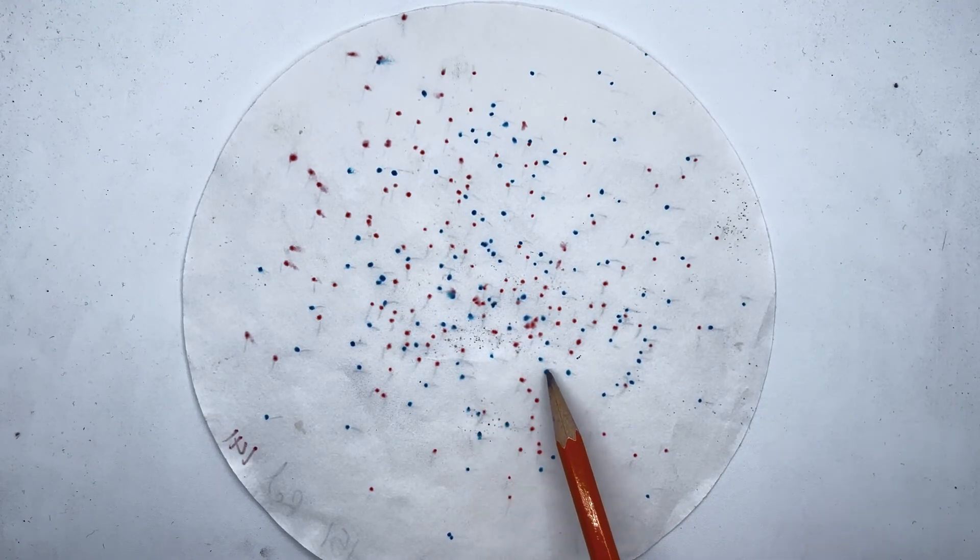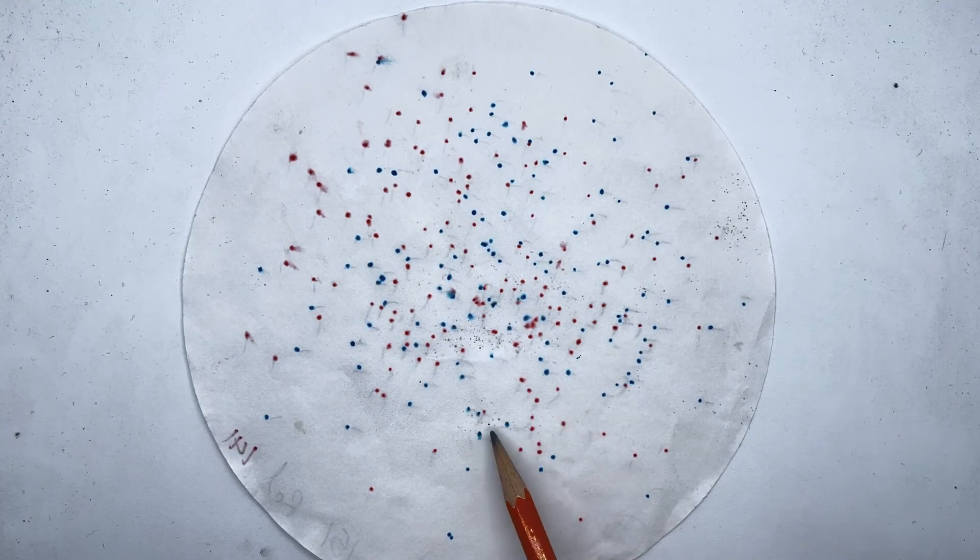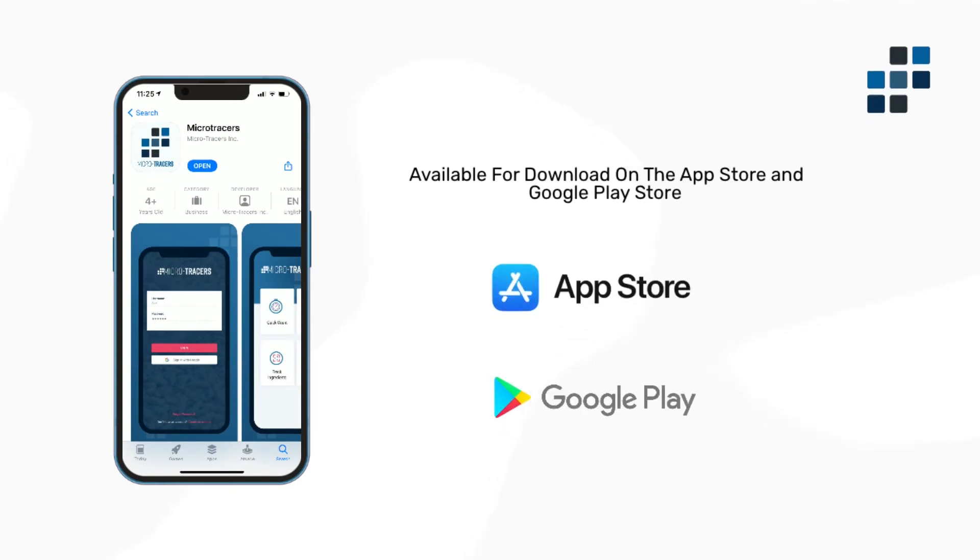With a simple tap, you can count hundreds of dye spots, saving time and money during Microtracer analysis. The spot counting app is available for download on the iTunes and Google Play stores, with detailed and easy-to-follow installation directions.